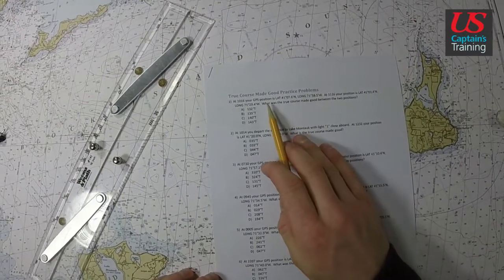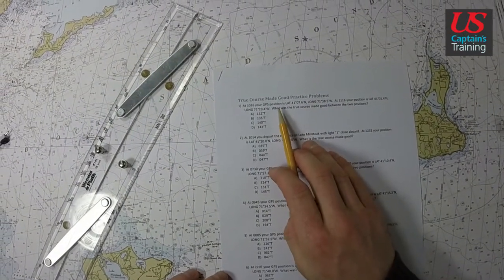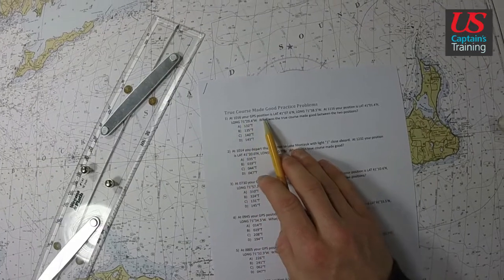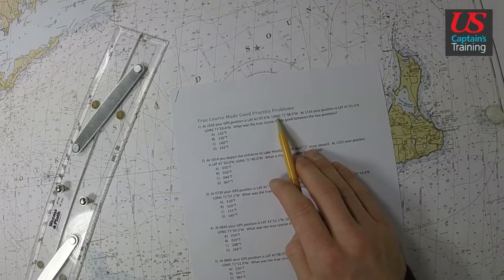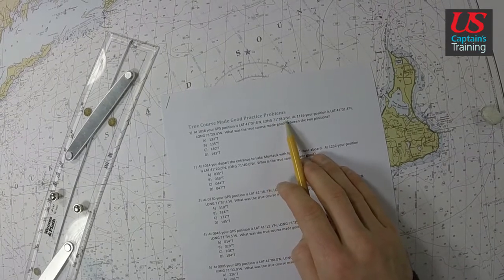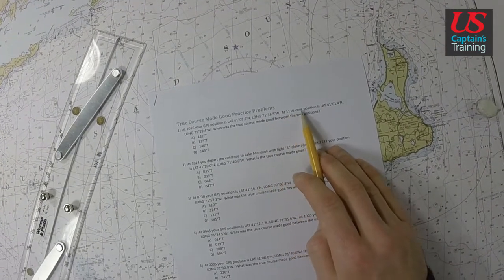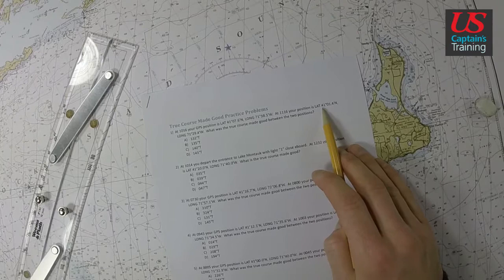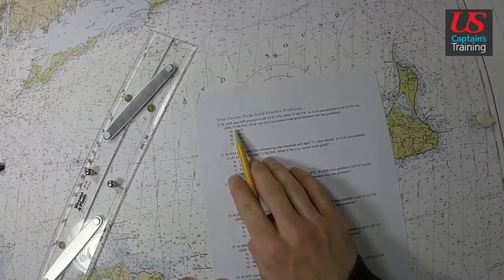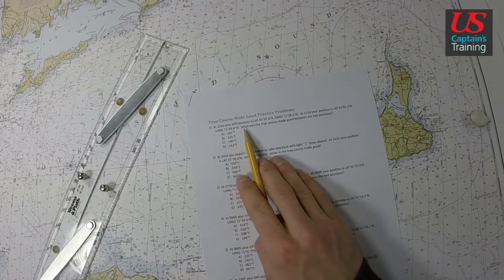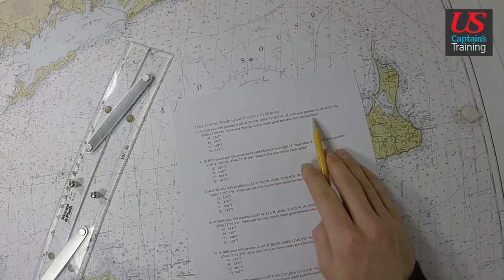True Course Made Good Practice Problem 1 reads: at 1016 your GPS position is latitude 41°07.6 north, longitude 71°38.5 west. At 1116 your position is latitude 41°01.4 north, longitude 71°29.4 west. What is the True Course Made Good between these two positions?